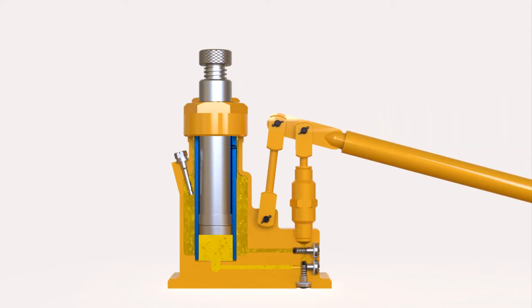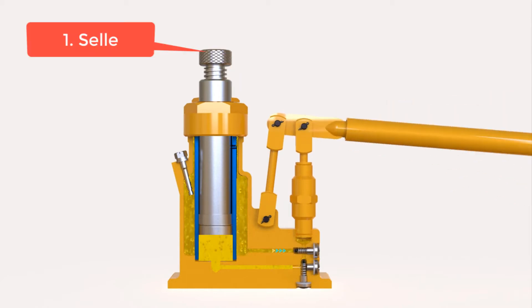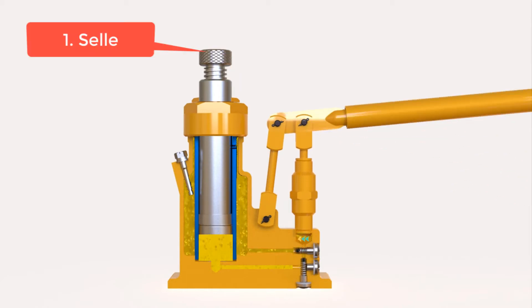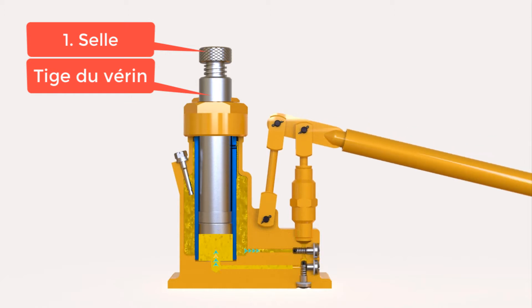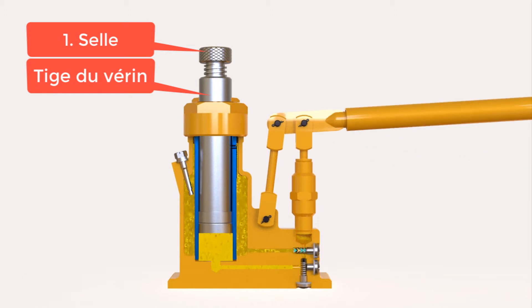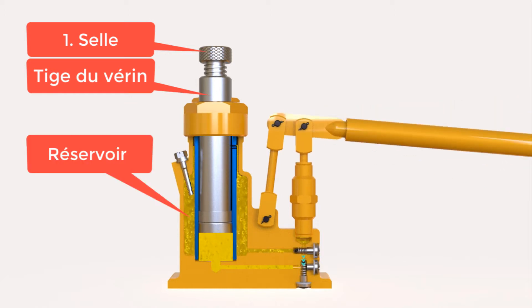The jack contains a liquid inside which pushes a piston upwards by the pressure required by the fluid through the movement of the lever down and up.